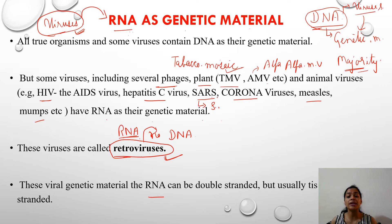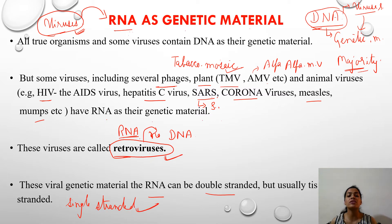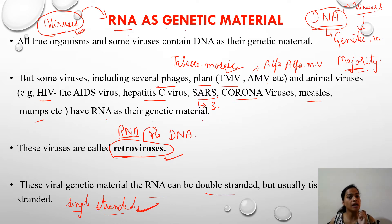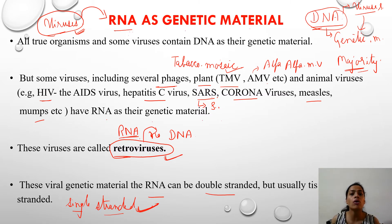In retroviruses, the RNA can be double-stranded or single-stranded, but in most cases of retroviruses, the RNA is single-stranded. Single-stranded RNA is most commonly found in retroviruses.